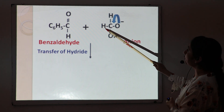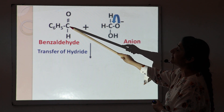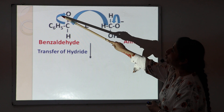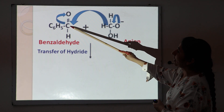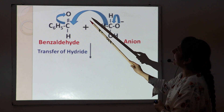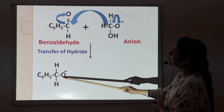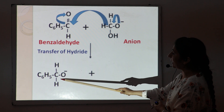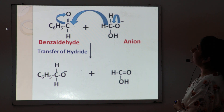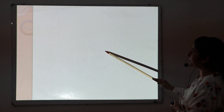The H⁻ ion acts as a nucleophile and attacks the positively charged carbon of benzaldehyde's carbonyl group, since oxygen withdraws electron density making the carbon positive. The hydride attacks this positive center to form a carbon-hydrogen sigma bond. Due to the migration of the hydride ion, two products are formed: a benzaldehyde anion and formic acid. This second step — the transfer of the hydride ion from the anion to benzaldehyde — is the slow, rate-determining step.